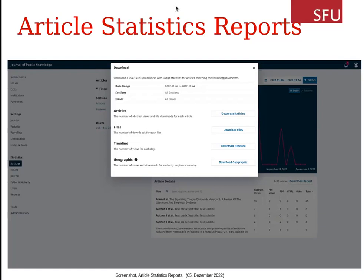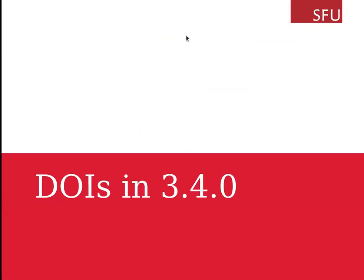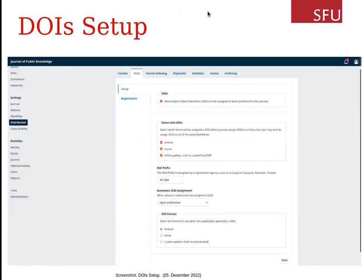That would be all about statistics reporting. I'll now say something about changes for DOIs in the next release. DOIs are now also implemented in core — there is no pub ID plugin anymore. The settings can be found on the distribution settings page under the tab DOIs. The setup is pretty much similar to the pre-existing plugin. New is the possibility to choose how DOIs should be assigned automatically: upon reaching the copy editing stage, upon publication, or manually. The default suffix is now a random six-character string followed by a two-digit checksum. There is still the possibility to use a pattern or to manually add the suffix, and everything will be migrated correctly from all versions.